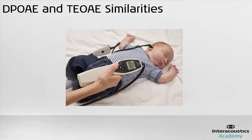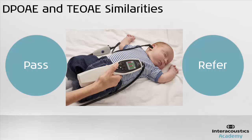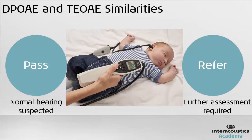In a screening programme, the OAE device will produce either a pass or a refer test result. With a pass, the chance of having a hearing loss that requires immediate intervention is very small. With a refer, not much can be said about the hearing and thus no conclusions can be made — further investigation is needed in these cases.